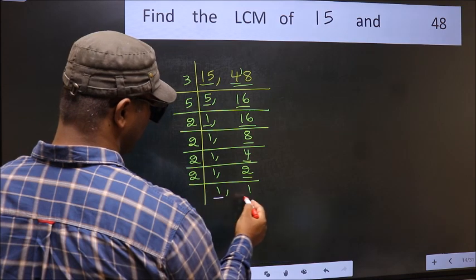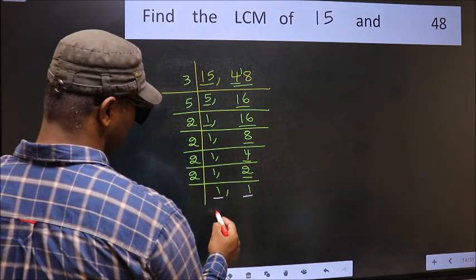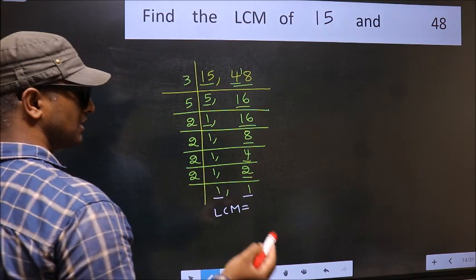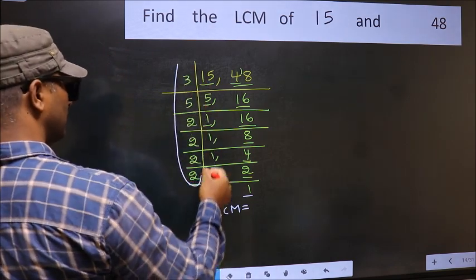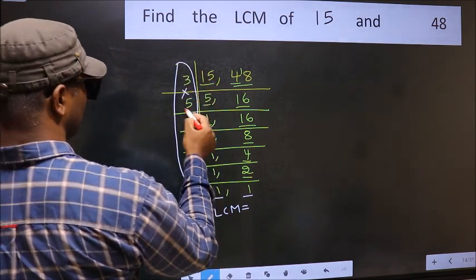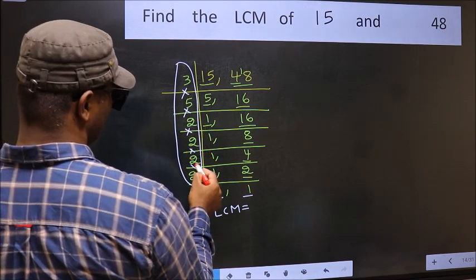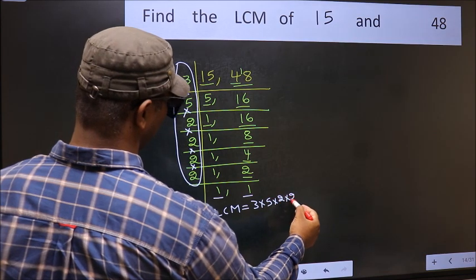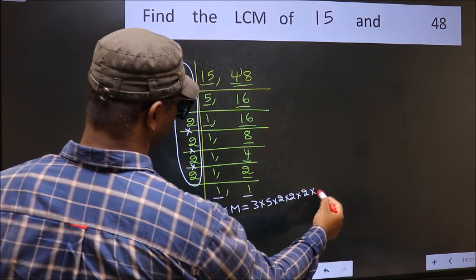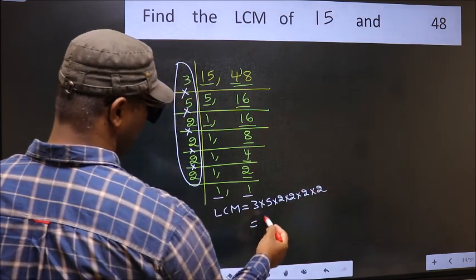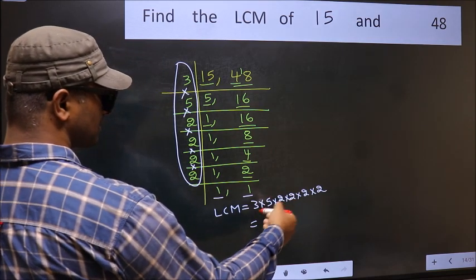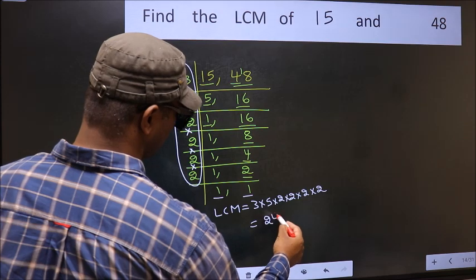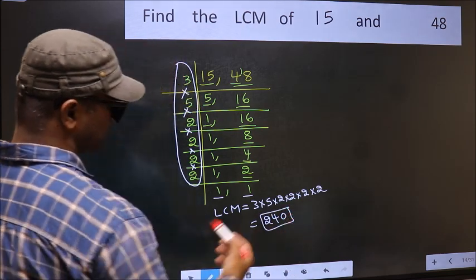We got 1 in both places. So our LCM is the product of these numbers: 3 × 5 × 2 × 2 × 2 × 2 × 2. When we multiply these numbers we get 240, which is our LCM.